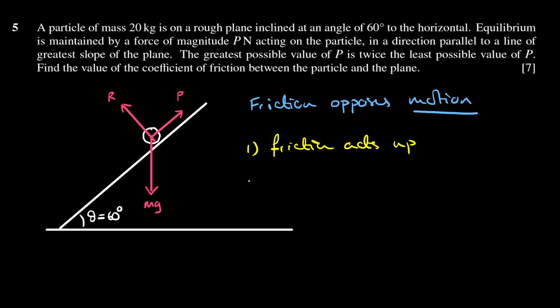For the second case, imagine we keep increasing P. The object, instead of falling down the slope, is going to be at the point where it's about to slide up the slope — P begins to drag it up. If the object is going to move up the plane, then friction will be acting down. In that case P has to be the bigger value, because it's not only opposing the weight component down the plane but also the friction acting down. So case one gives the lower value of P, and case two gives the upper value.